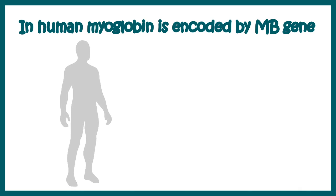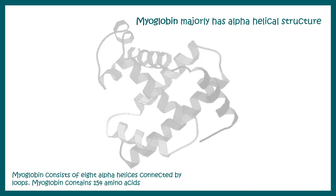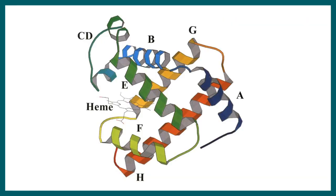In humans, myoglobin is encoded by the MB gene, which is located on chromosome 22, specifically at locus 22q12.3. Myoglobin is majorly composed of alpha-helical structure and contains 154 amino acids.